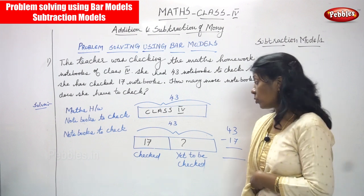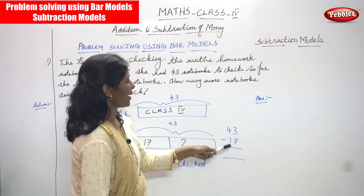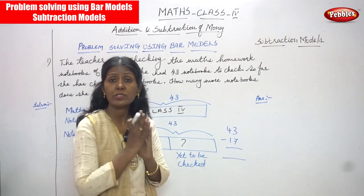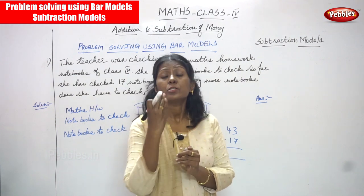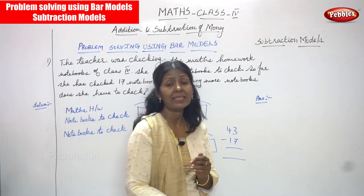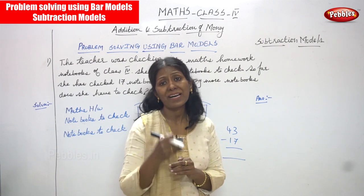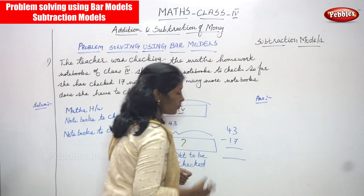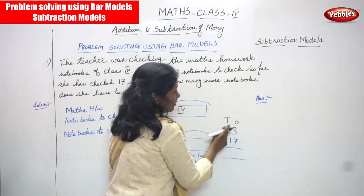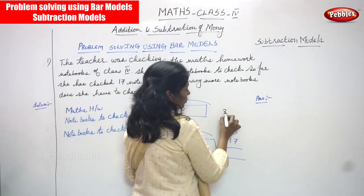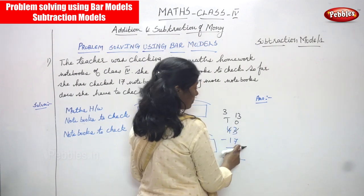She has checked only 17 notebooks, so we need to find how many are yet to be checked. We do 43 minus 17. Now, 3 minus 7 is not possible, so we have to borrow from the tens place. The 4 in the tens becomes 3, and the 3 in the ones becomes 13, because we borrowed 1 ten — so 10 plus 3 equals 13.